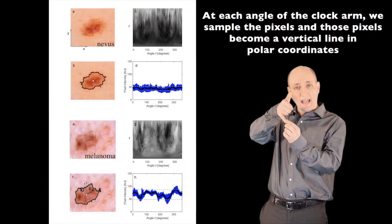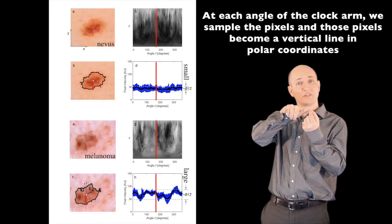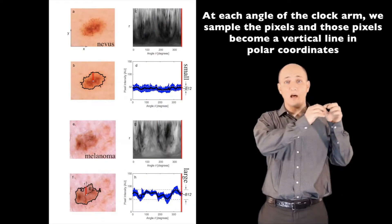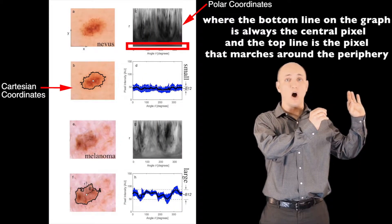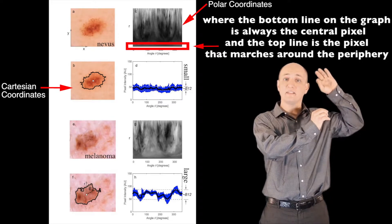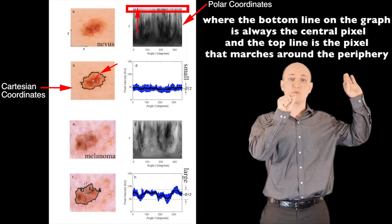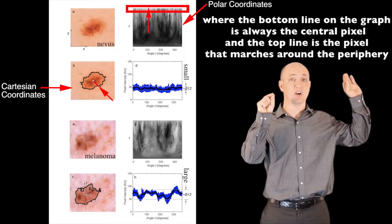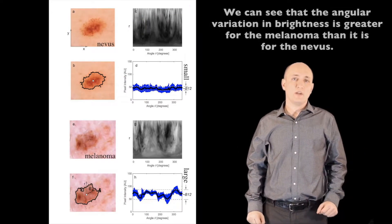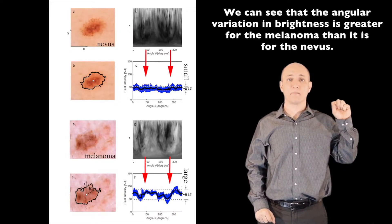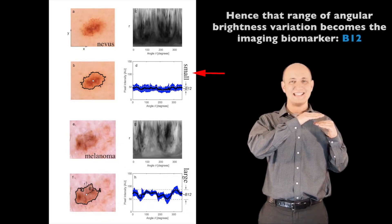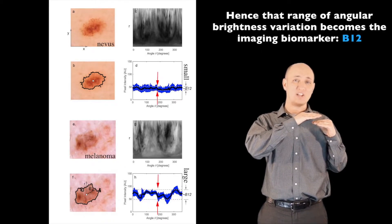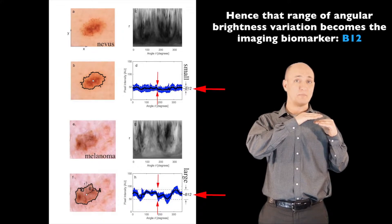The 11:30 clock arm occupies bright pixels, whereas in the nevus, these two clock arms sample pixels of moderate brightness. At each angle of the clock arm, we sample the pixels, and those pixels become a vertical line in polar coordinates, where the bottom line on the graph is always the central pixel and the top line is the pixel that marches around the periphery of the Cartesian image. The angular variation in brightness is greater for the melanoma, and that range of angular brightness variation becomes imaging biomarker B12.